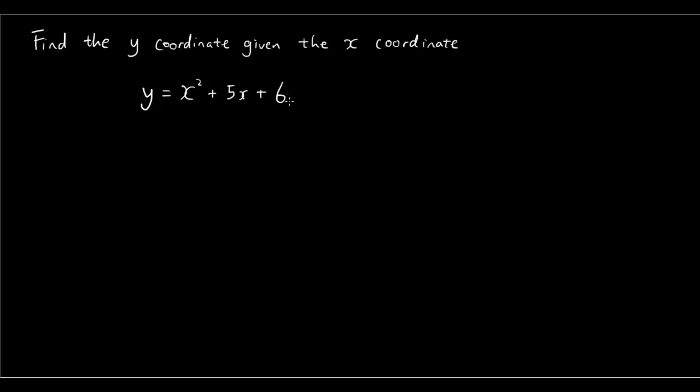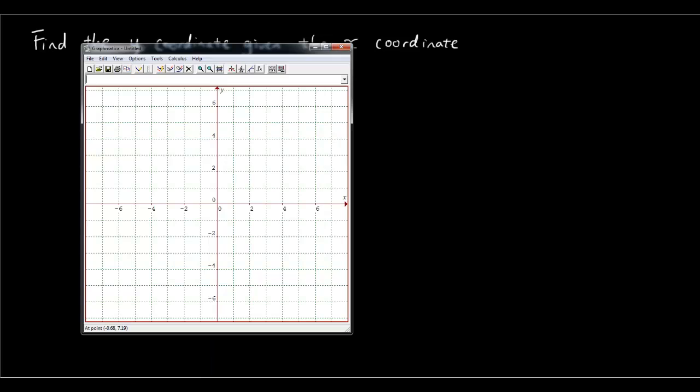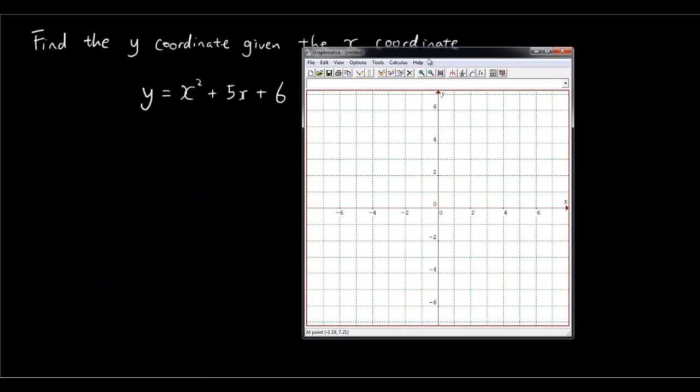And in this quadratic equation let's graph this equation straight away. Let's get your graphmatica out and let's type that equation into graphmatica: y equals x to the power of 2 plus 5x plus 6. Notice that to the power of you get this symbol by pressing Shift 6.